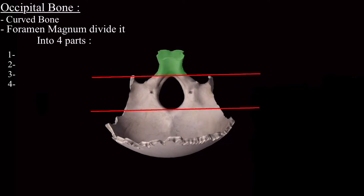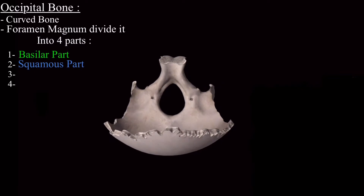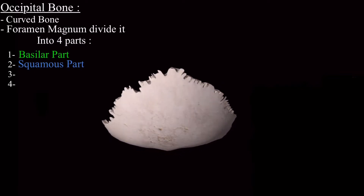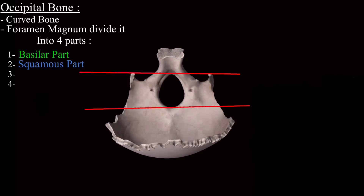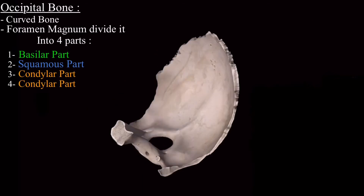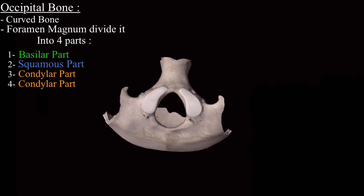The part anterior to the foramen magnum is called the basilar part. The part posterior to the foramen magnum is called the squamous part — it is called squamous because it is smooth in nature. The third and fourth parts are present on either side of the foramen magnum and are called the condylar parts, because the main structures present in that region are the condyles.